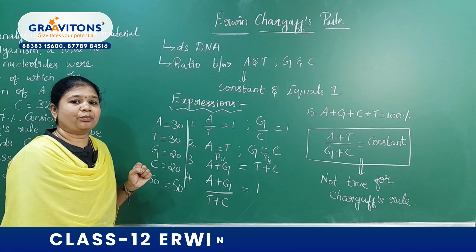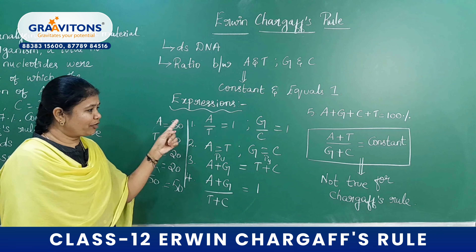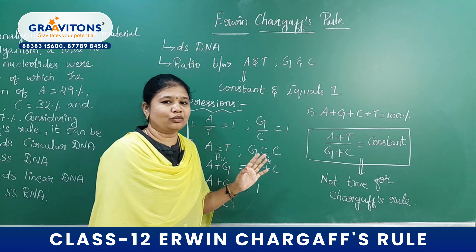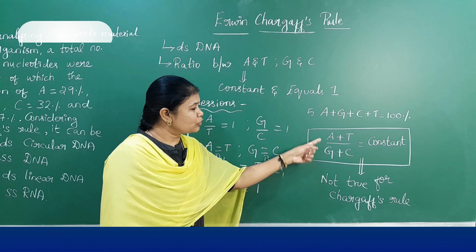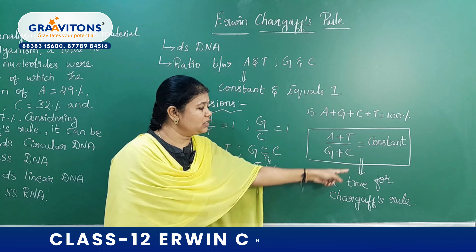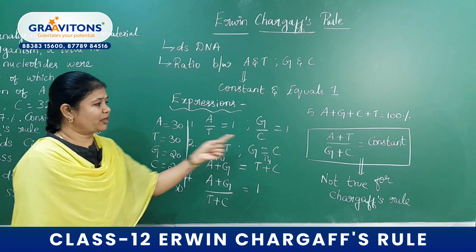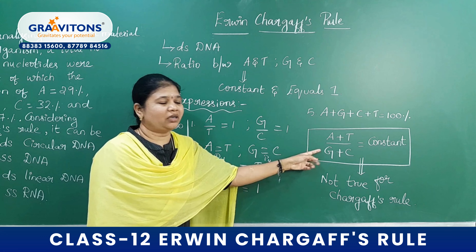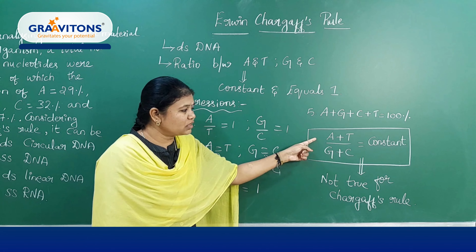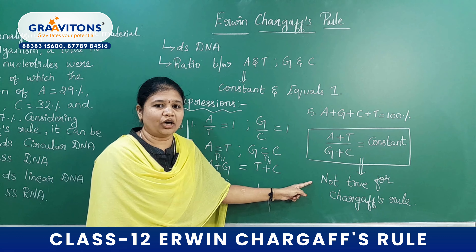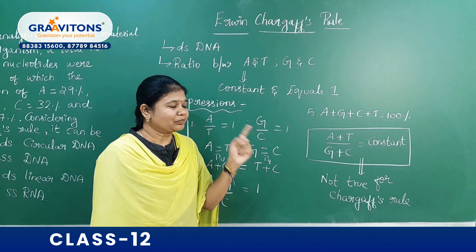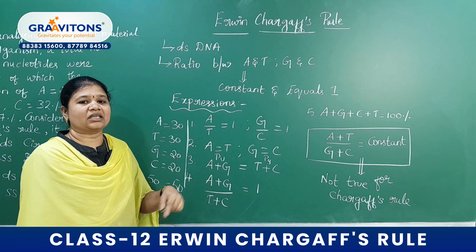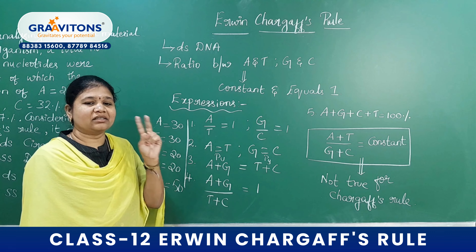Regarding Chargaff's rule, we can expect three ways of questioning. The first is finding out the expressions — normally they will ask for the expression which does not hold good for Chargaff's rule. That expression is: (A plus T) divided by (G plus C) is constant — this is not true. Applying our values: A plus T equals 60, G plus C equals 40, and 60 divided by 40 is not constant and equal to 1. The second way of questioning is providing the percentage or number of any one base and asking you to find the remaining bases.